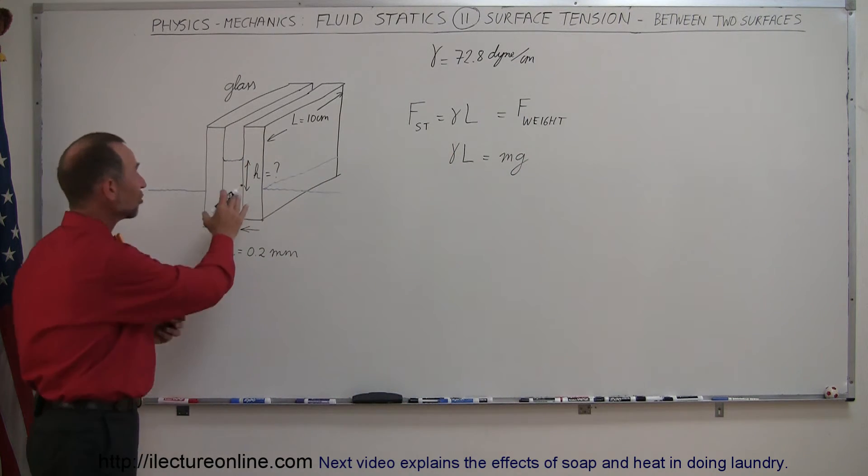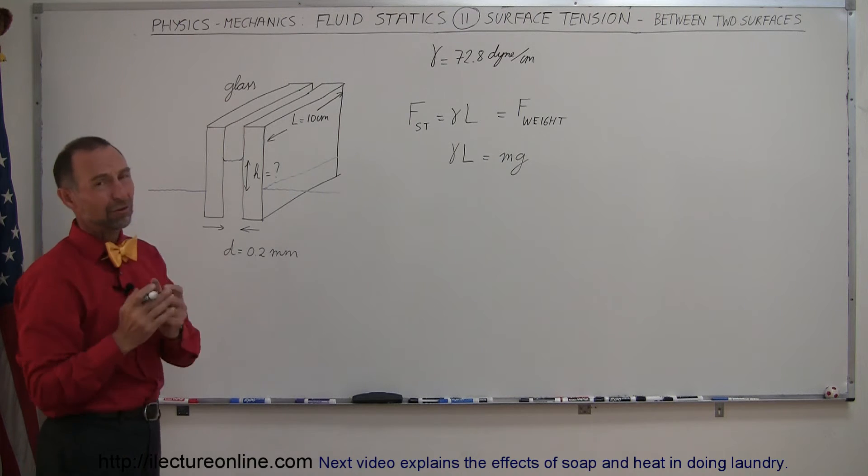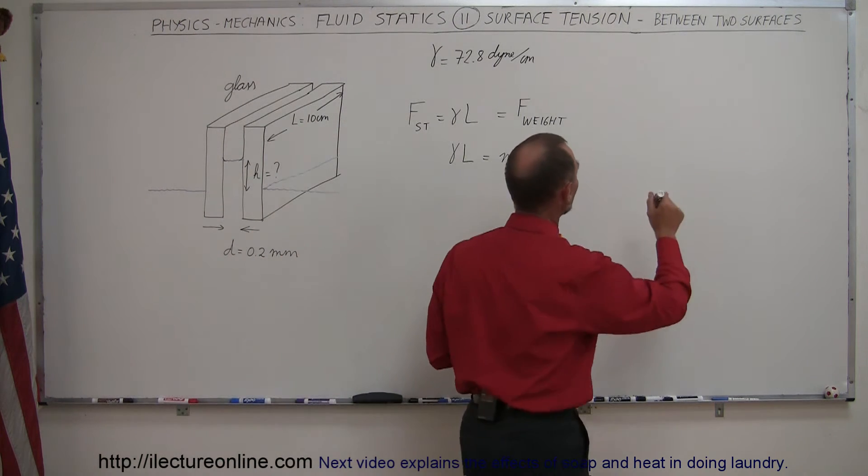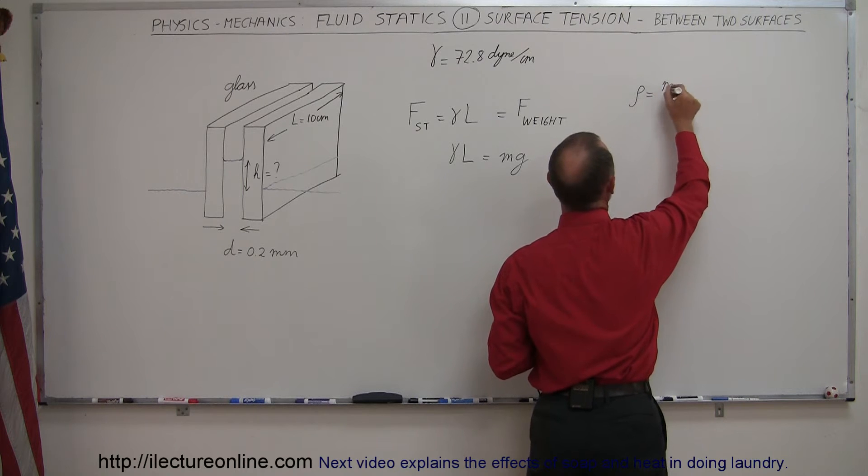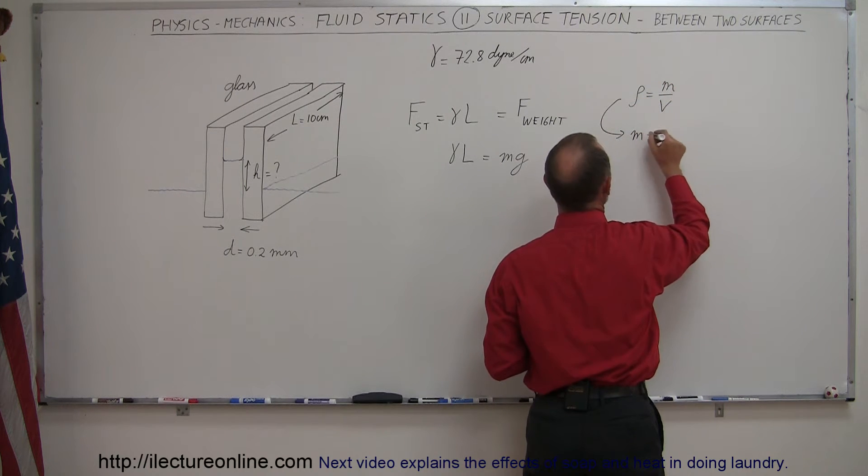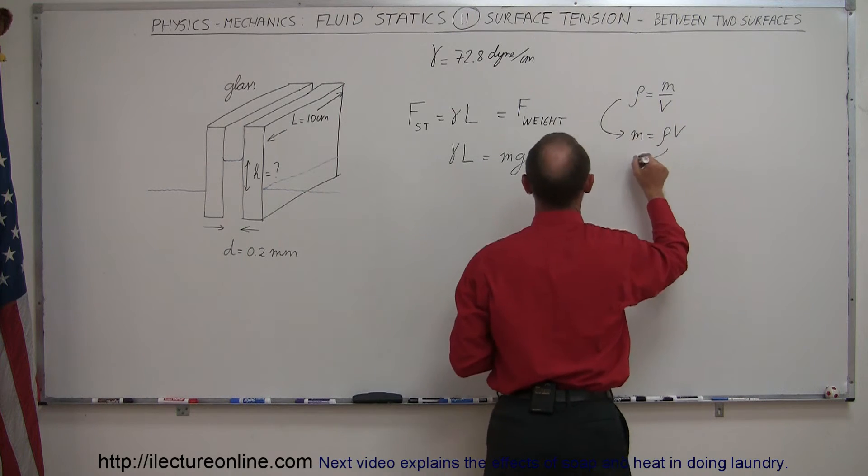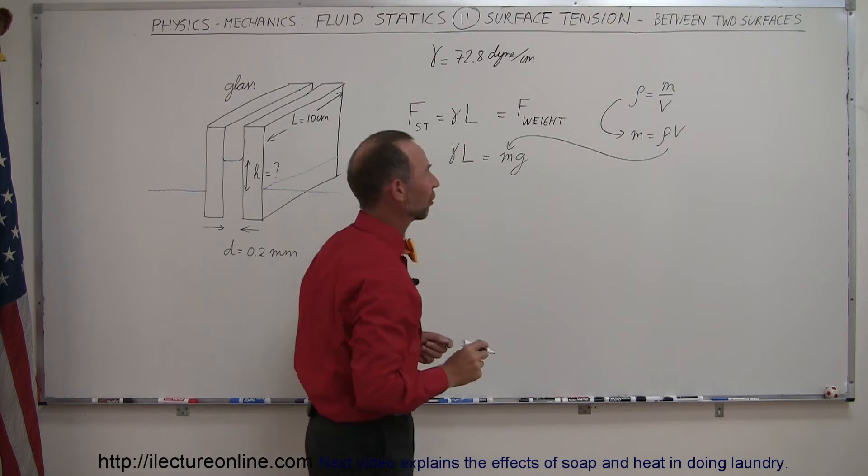Now we don't see an h yet, but that will come in just a moment because the mass of a liquid can be expressed in terms of density and volume. The density is equal to the ratio of mass divided by volume, which means that mass can be written as density times volume, and we'll substitute that in.